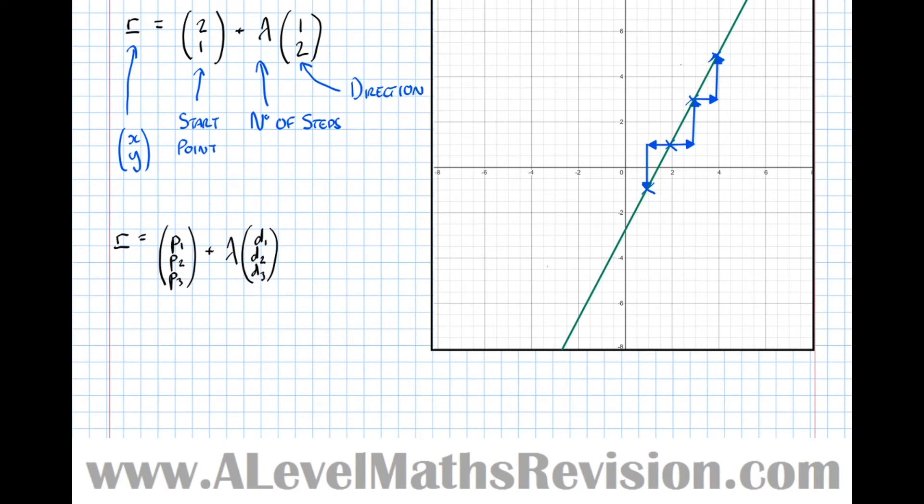So any point on this 3D line, i.e. XYZ is what R means, XYZ. Again, this is our point to start at. This is our number of steps. And this is our direction in which we're allowed to walk.